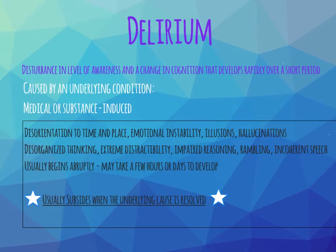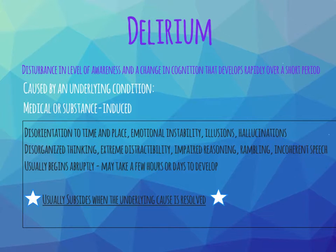The first topic under neurocognitive disorders is delirium. Delirium is defined as a disturbance in the level of awareness and a change in cognition that develops rapidly over a short period. This is an acute crisis—not a long-term progressive disorder. It happens quickly as a result of an underlying condition such as a medical disorder. Examples include urinary tract infections in older folks, high fever, meningitis, dehydration or electrolyte imbalances such as hyponatremia, and seizures—people who are post-ictal can have delirium. Symptoms of delirium include disorientation to time and place; people don't know who or where they are and are very confused.